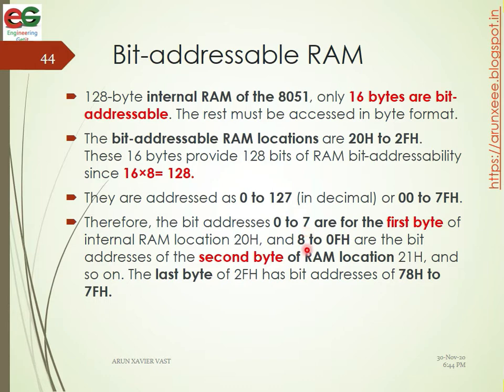Bit address 8 corresponds to 0FH location. If we go to the decimal number 8 to 15, it is the location of 21H — that is the second byte, up to 7FH.